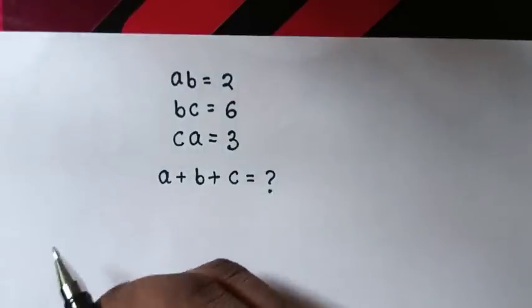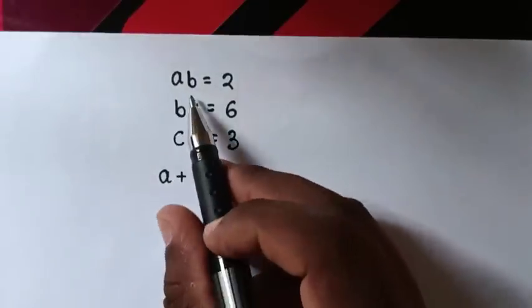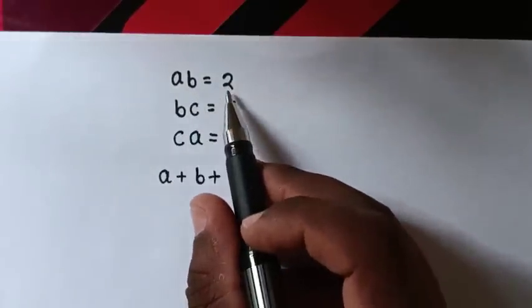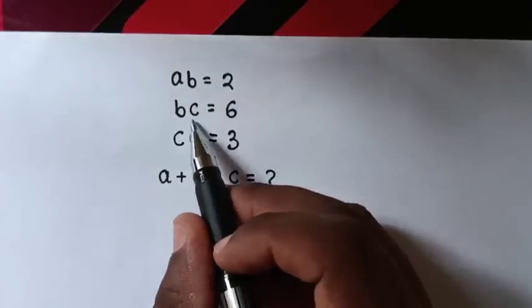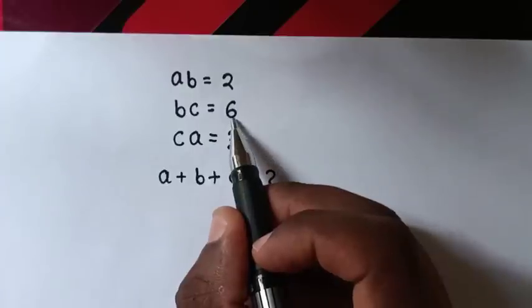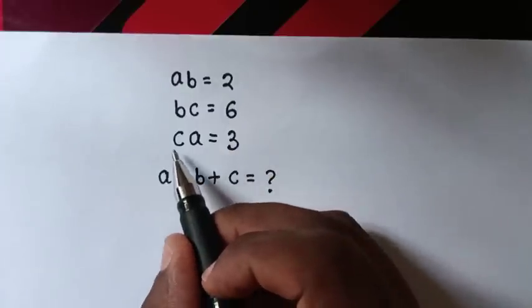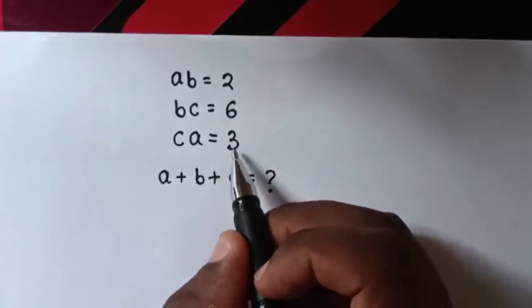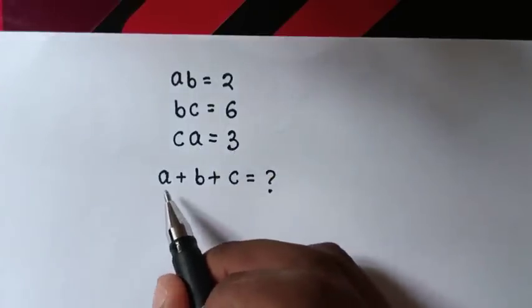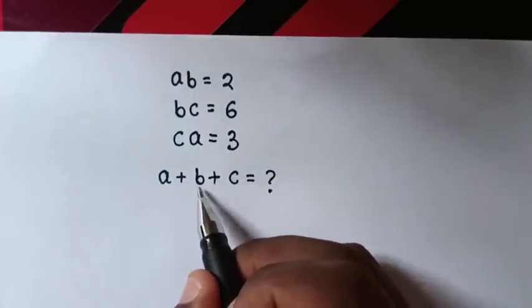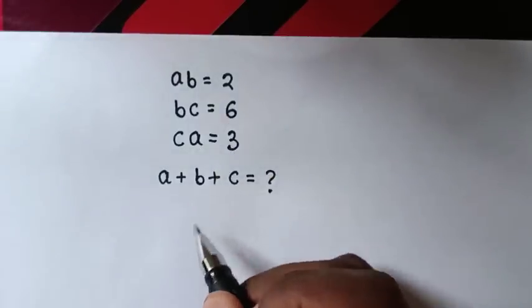Hello! How to solve: AB equals 2, BC equals 6, and CA equals 3. Find the value of A plus B plus C.